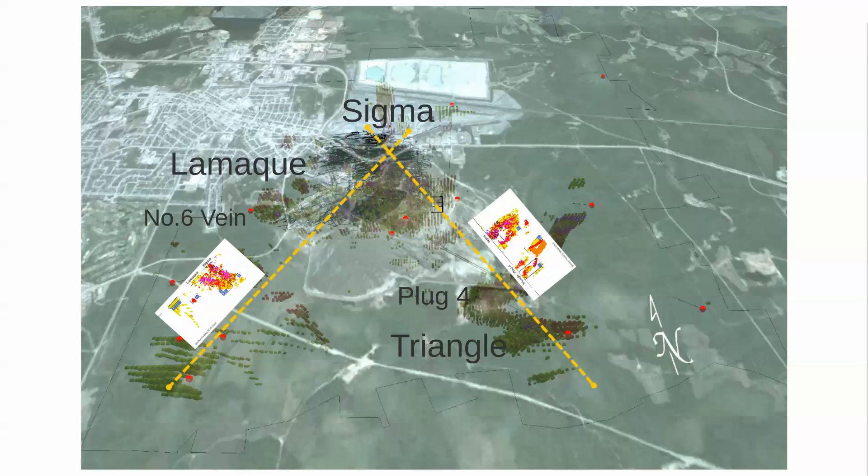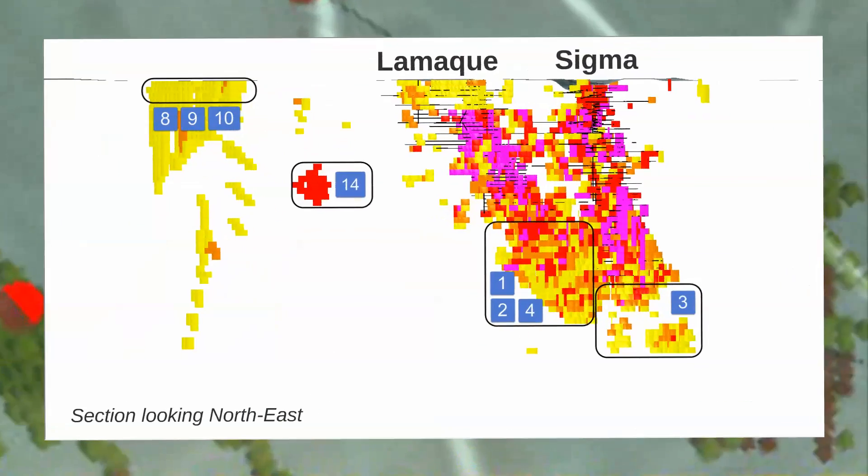One of the benefits of our strategy is that we can test whether it actually works by comparing the prospectivity scores with known mineralization. Let's take a look along two sections on the Sigma Lamaque property.